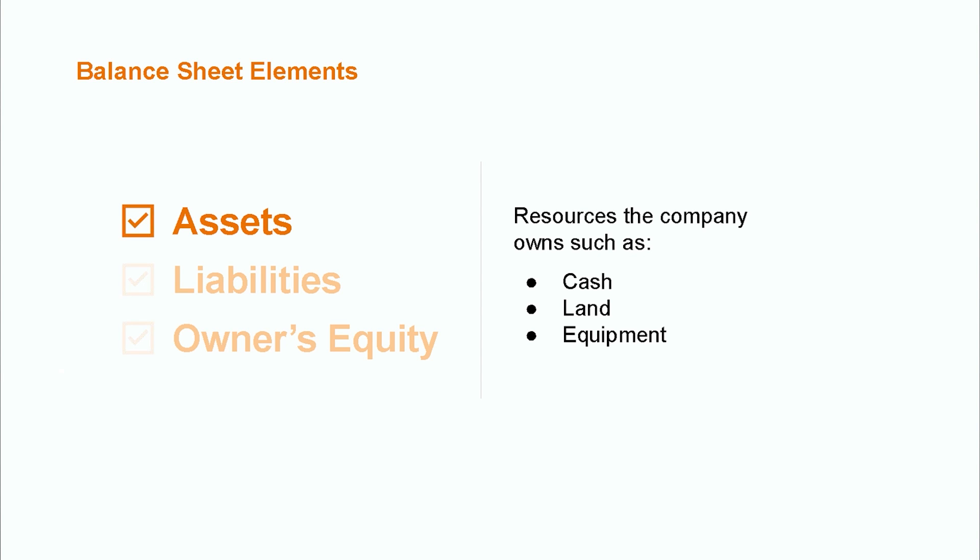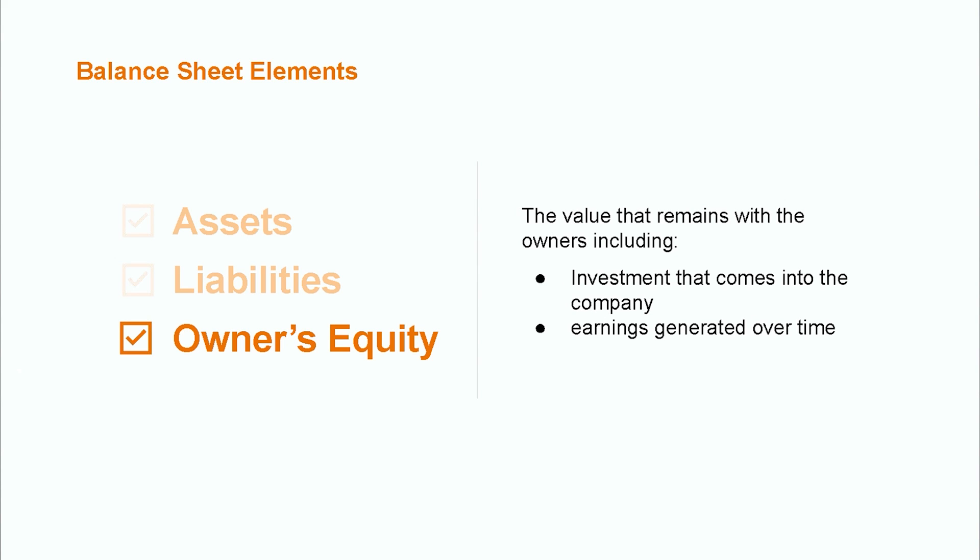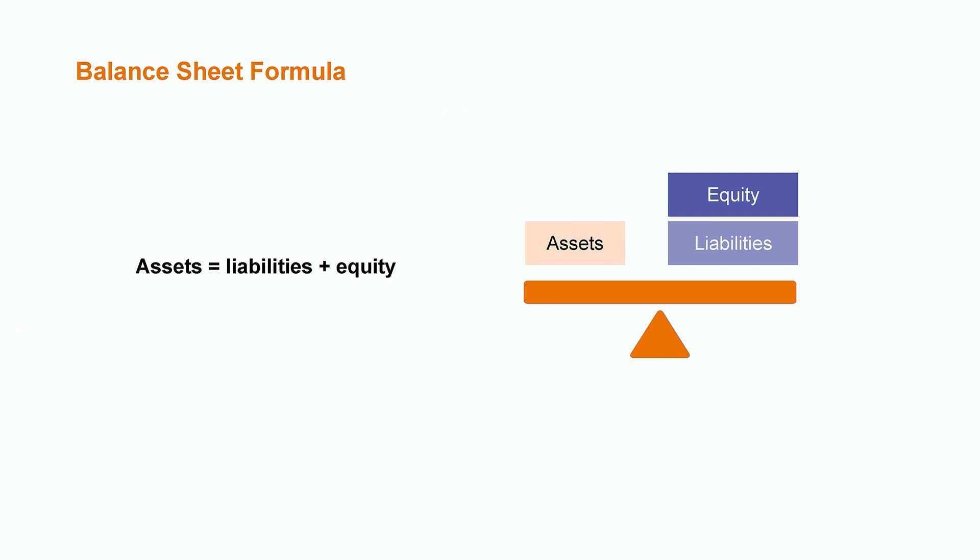Now that we understand more about the purpose of the balance sheet, let's dive into some of the details. You can think of the balance sheet as a snapshot of a moment in time that gives us an overview of an organization's financial health broken down into assets, liabilities, and owner's equity. Assets are the resources the organization owns, such as cash, land, and equipment. Liabilities are debts that the organization has taken on, such as bank loans, wages owed to employees, or debts owed to suppliers. In a perfect world, a company would be able to cover all their liabilities with the assets that they own. Owner's equity is the value that remains with the owners, including investment that comes into the company and earnings generated over time. On the balance sheet, the value of the company's assets must always equal the value of the company's liabilities plus their owner's equity — this is where the term 'balance sheet' comes from, since it must always remain in balance.